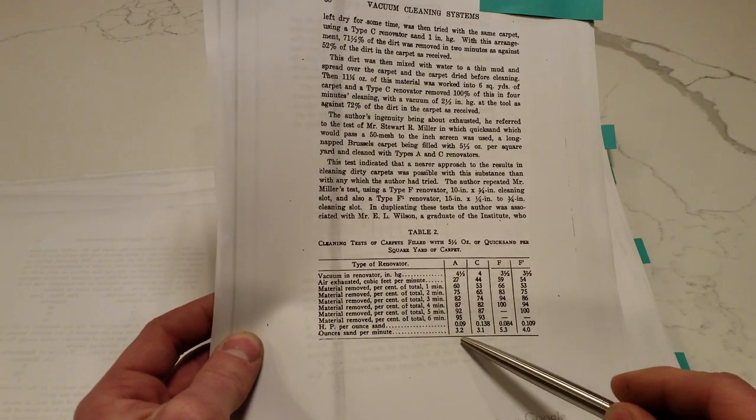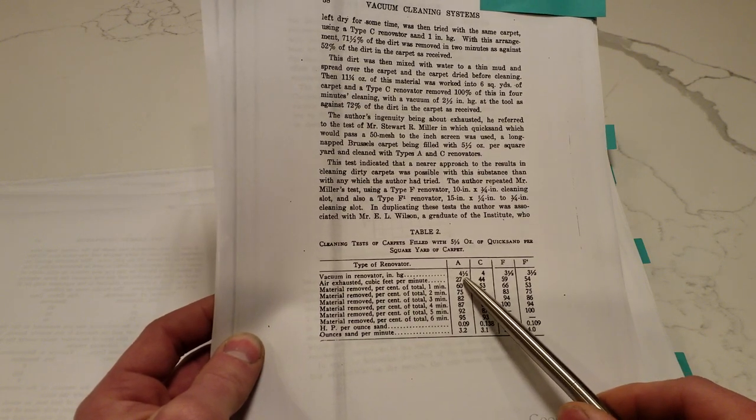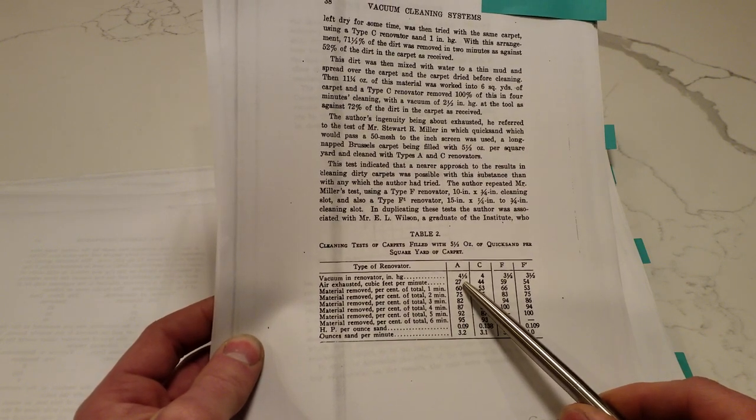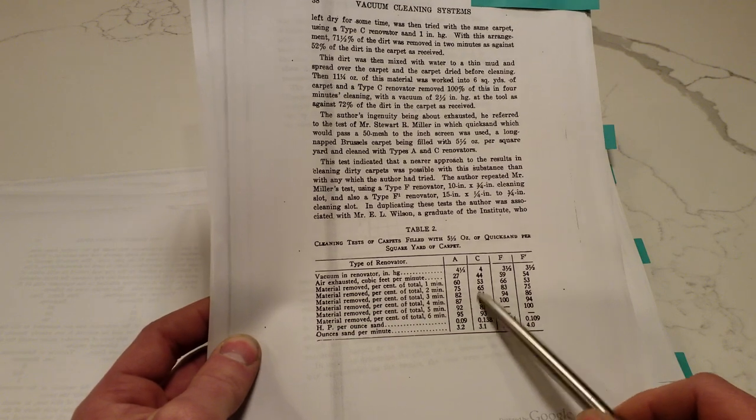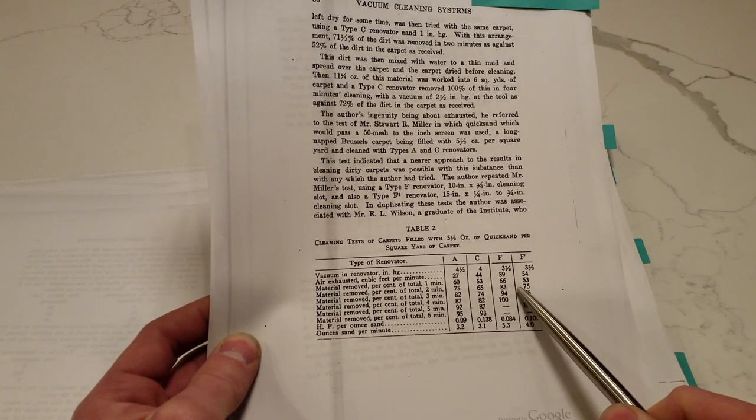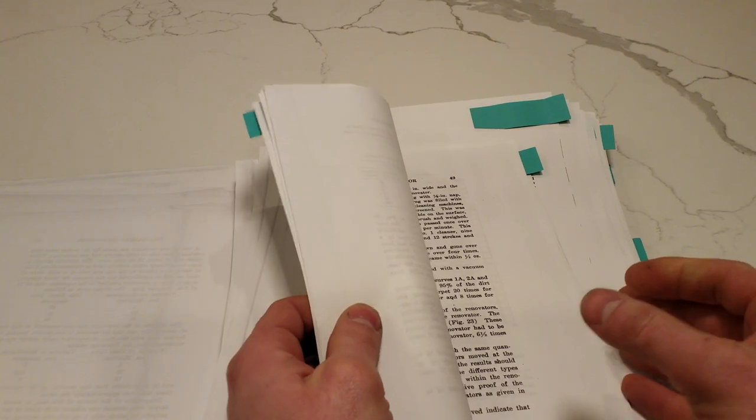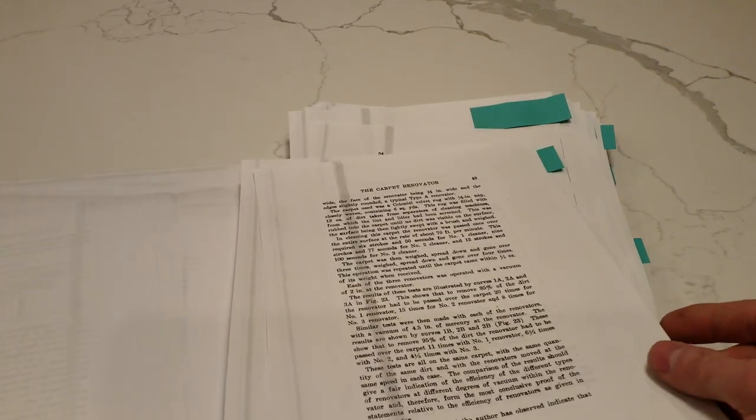But also, as this text goes into, because the type A renovator didn't need to exhaust nearly as much air to develop a high velocity inside of it, it was using less power than the wide slot tool. But at the disadvantage that it couldn't suck anything up.